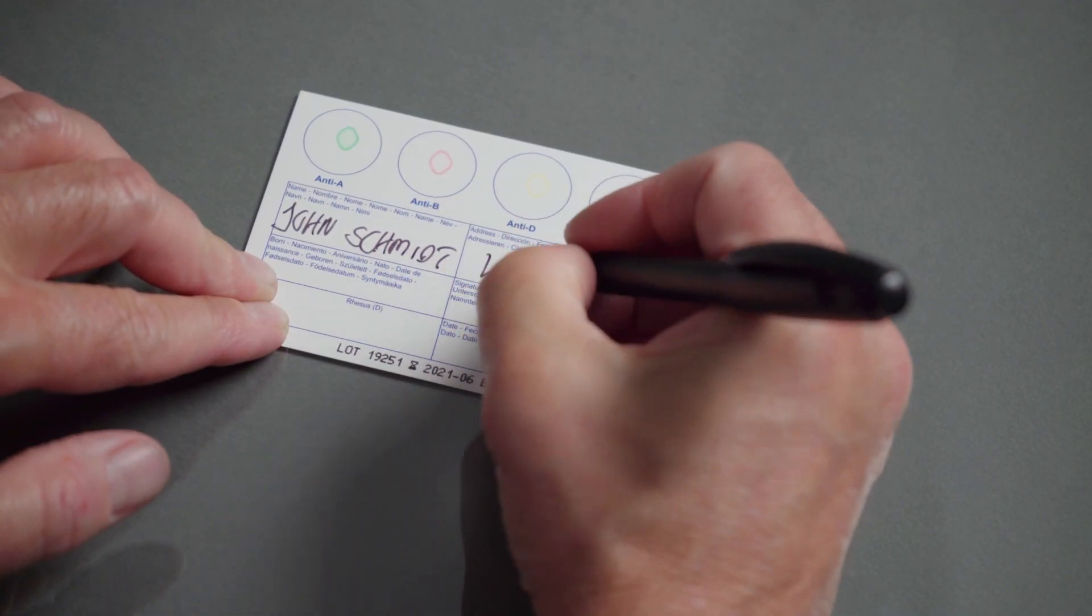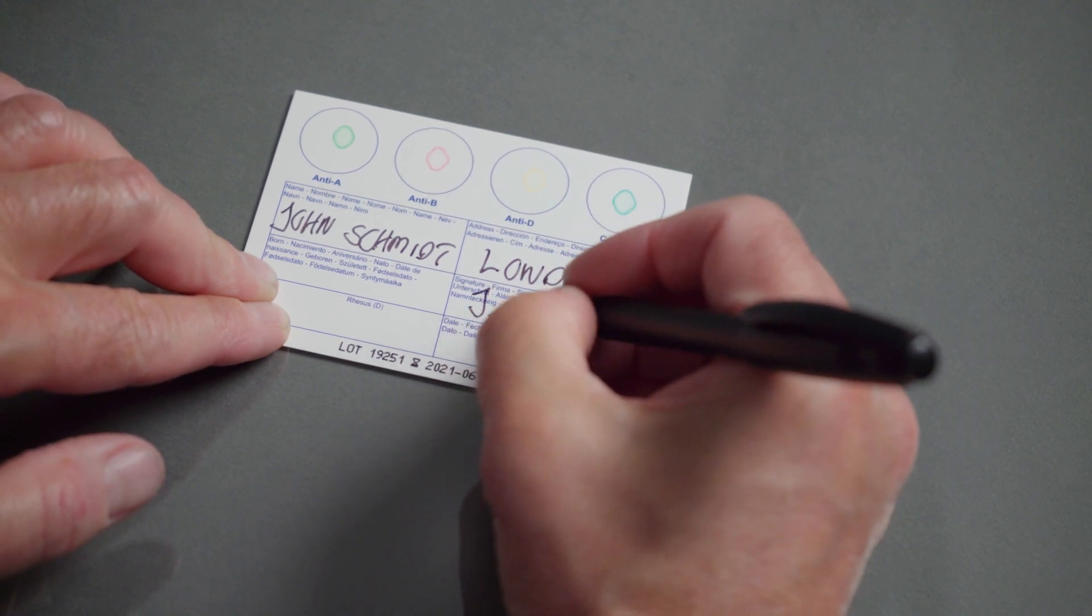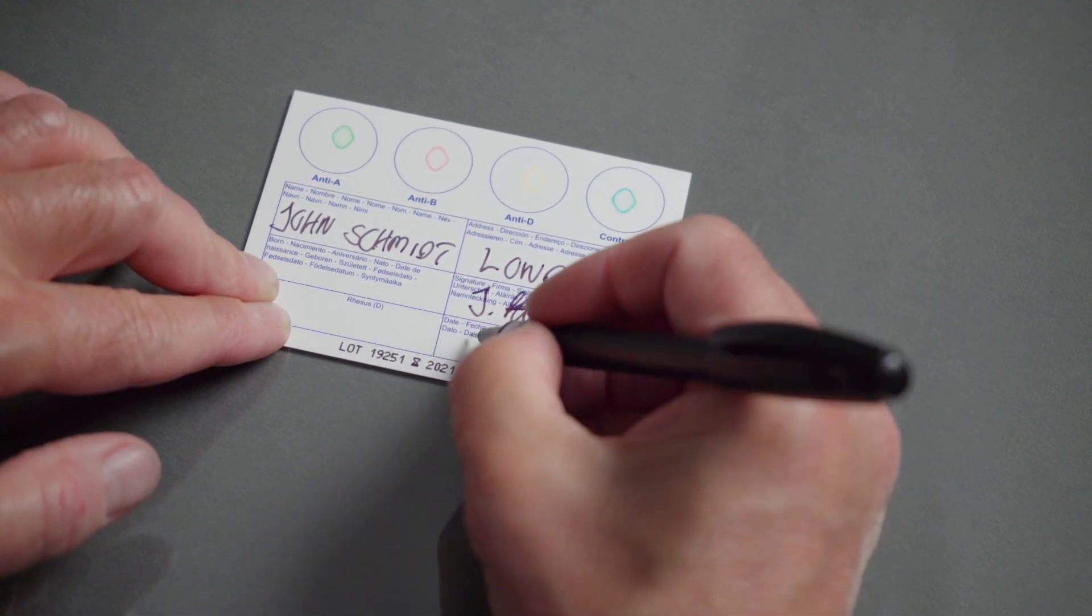Write personal data on the Elden card. Make sure all reagent spots are present as green, red, yellow and blue.